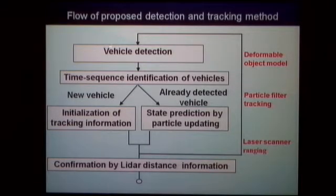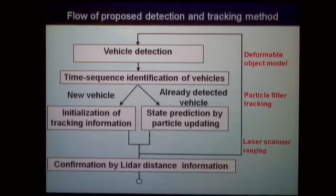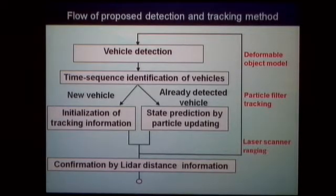I'll explain the overall flow of the proposed detection and tracking method. First, vehicles are detected by the deformable object model, and then time-sequence identification of vehicles between the current and previous frames is performed. When they are identified, we determine whether these are already-detected vehicles, and the particles are updated. For cars detected for the first time, the tracking information of the particles is initialized according to the Gaussian distribution. Later, the results are confirmed by radar distance information.